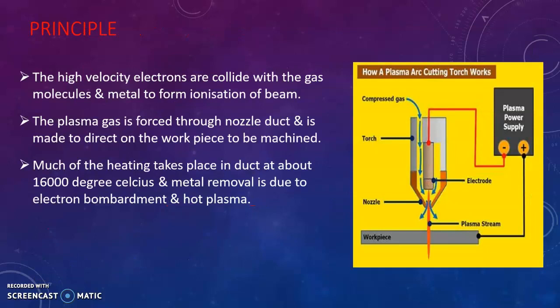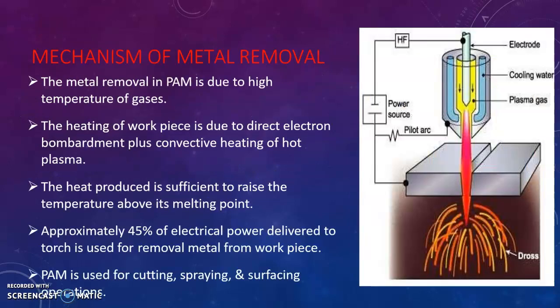The ionized gas or plasma gas is forced through a nozzle and focused towards the workpiece. Metal removal takes place due to the high temperature of the gases. The heating of the workpiece is due to bombardment of direct electrons and also by the convective heating of hot plasma. The heat produced by the beam of plasma is above the melting point of the material, and the molten metal is removed by the beam itself.